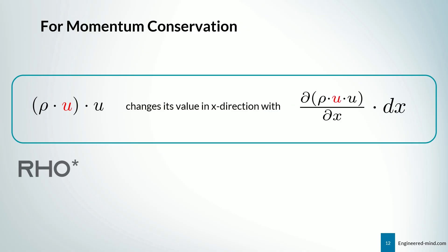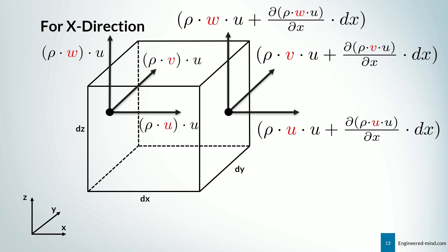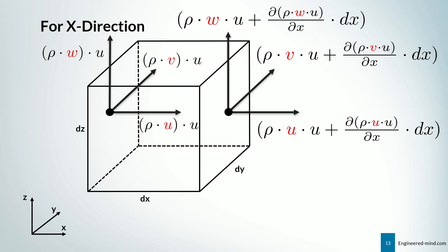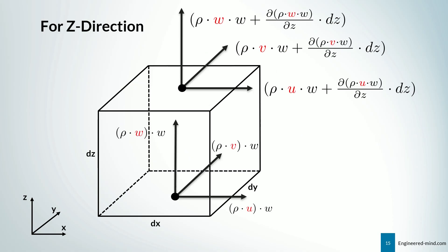So here we have that rho times u times u changes its value in x direction with d by dx of rho times u times u times dx. Here we have all the momentums acting on the x faces. So we have three momentums acting on each x face. So we have six in total with the change along each component respectively. The same goes for the y direction or y faces as well as for the z faces.